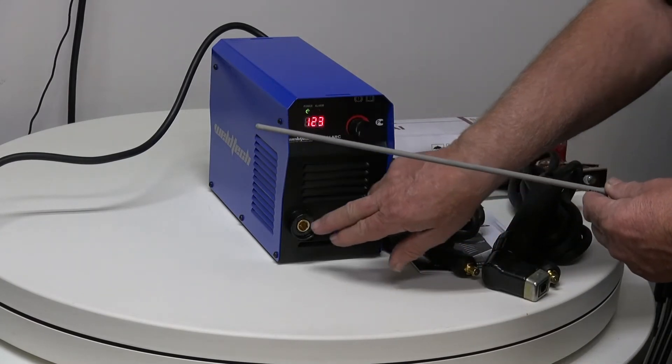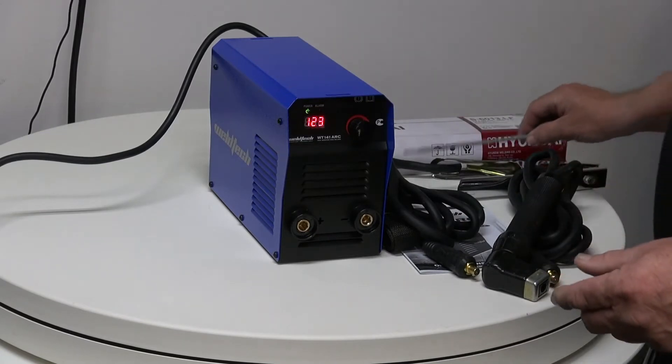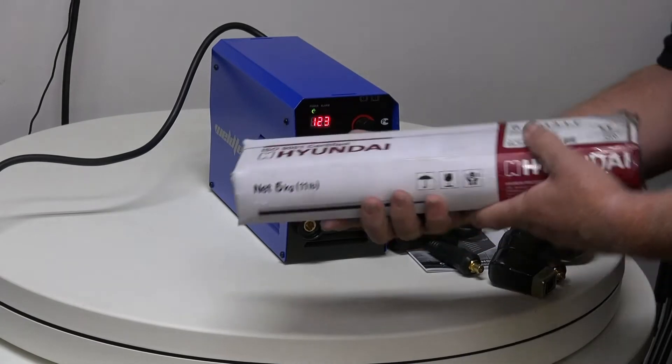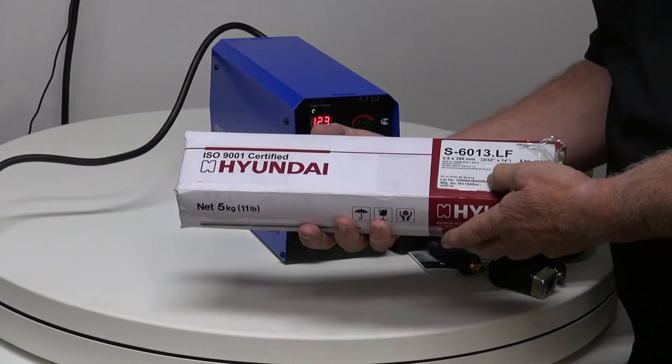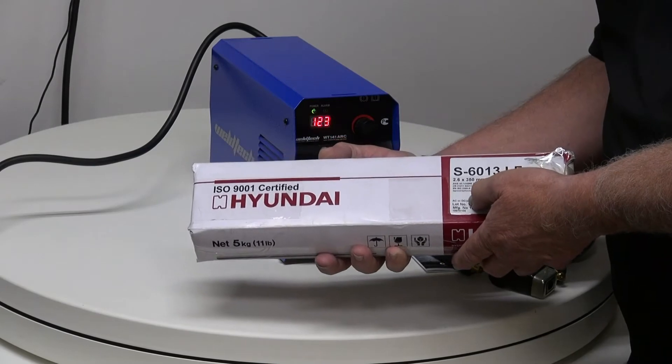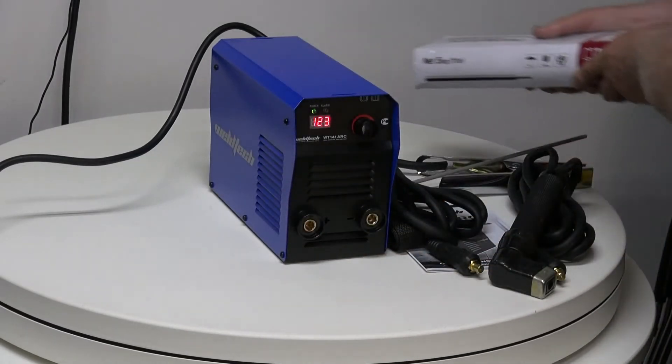Either the negative or the positive. And we don't have to guess about that. If we go to the packet of electrodes, if we have a look at the packet of electrodes it will say on there a little symbol saying DC. In this case it says positive at the top. So we put it into the positive side.